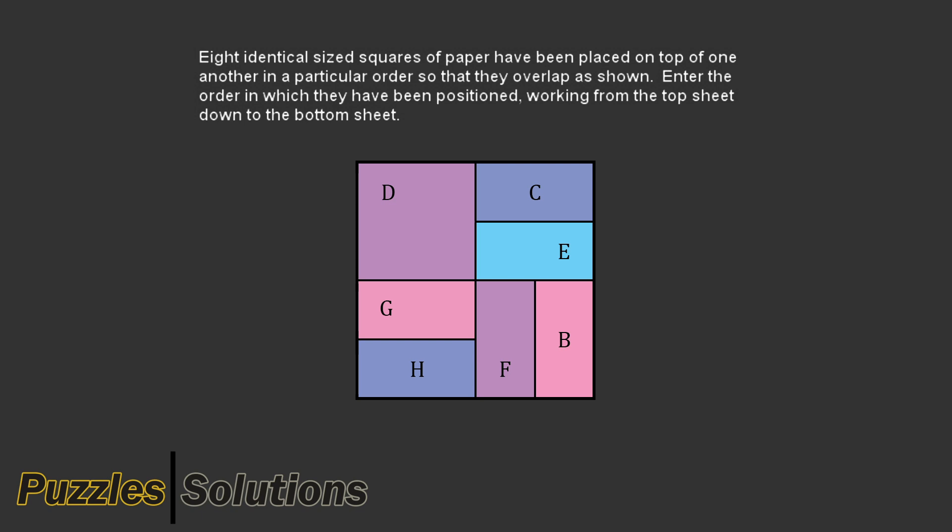Again, imagine that we remove D. Only paper G is directly under paper D, so the only possibility is that all of G is visible from removing D.